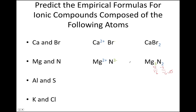Aluminum forms ions with a charge of plus three and sulfur forms ions with a charge of minus two, so the empirical formula for aluminum sulfide is Al₂S₃. And potassium forms ions with a charge of plus one while chlorine forms ions with a charge of minus one, so the formula for potassium chloride is KCl.